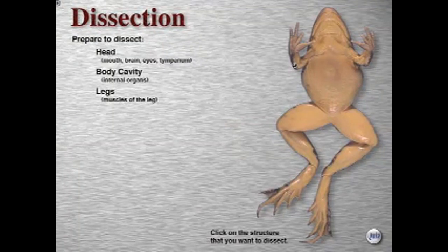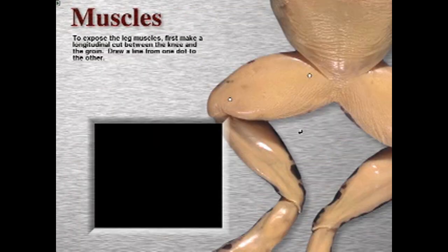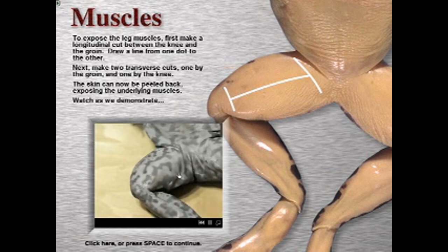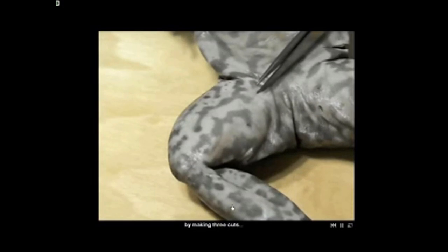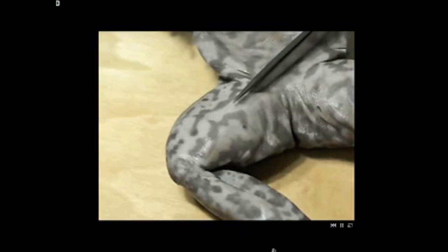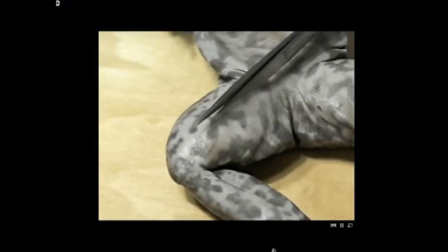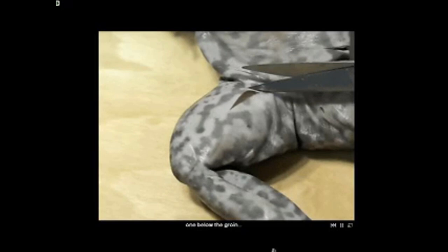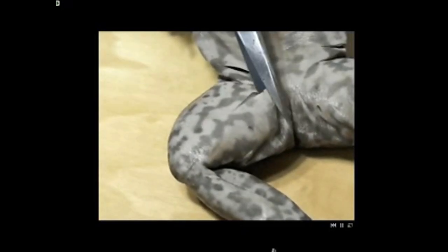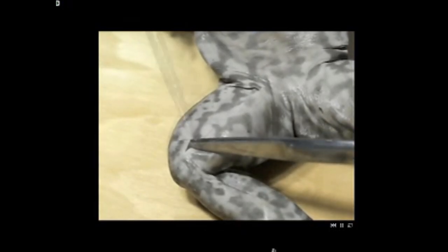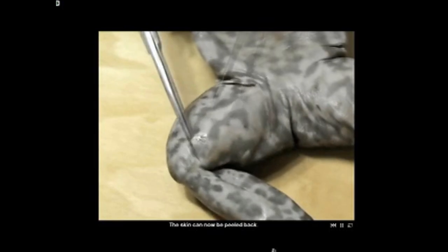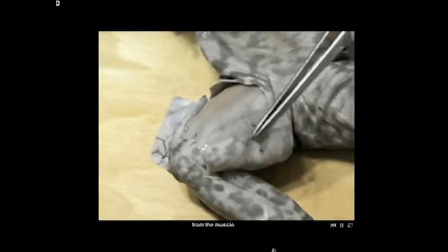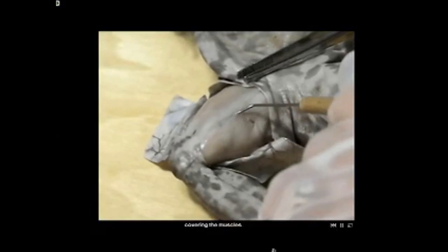So now let's start dissecting. We could begin with the head or the body cavity or the legs. Let's do the legs. The instructions tell us to connect the dots. If we do it well enough, a movie will play down here. The skin on the thigh is removed by making three cuts: a longitudinal cut from the groin to the knee, and two transverse cuts — one below the groin and the other above the knee. The skin can now be peeled back. Notice how easily it comes away from the muscle. Next, cut the thin membrane covering the muscles.